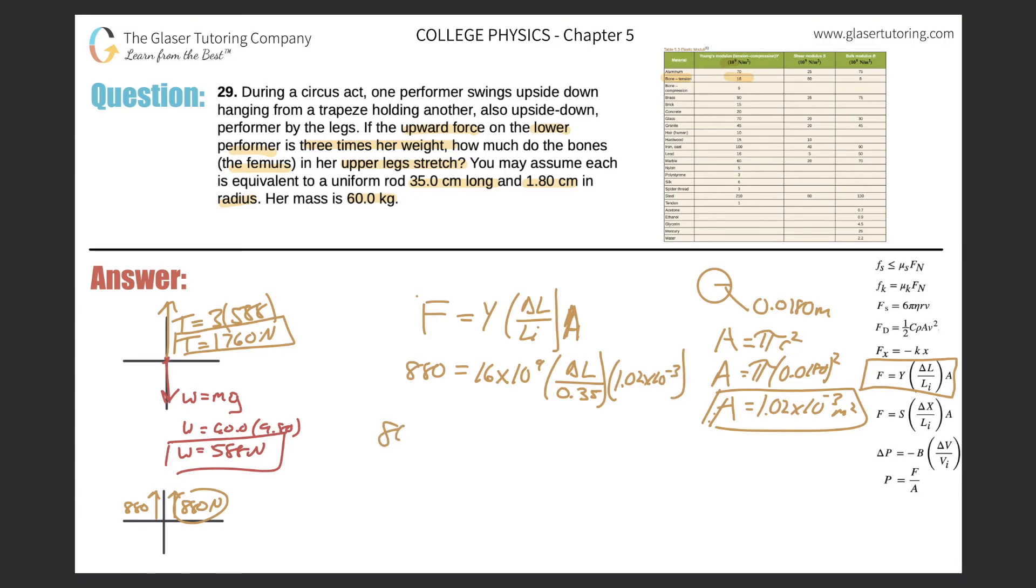And now let's clean it all up. So we have 880 newtons of force. Let's do 16 times 10 to the 9 times 1.02 times 10 to the negative 3, all divided by 0.35. And we get a value of 4.66. It looks like 4.66 times 10 to the 7, times 10 to the 7 multiplied by delta L. Now I want to find delta L, so simply divide this out. Remember, delta L represents the change in length, and that's what we're looking for. Times 10 to the 7th. So the change in length of the femurs will be 880 divided by 4.66 times 10 to the 7th.